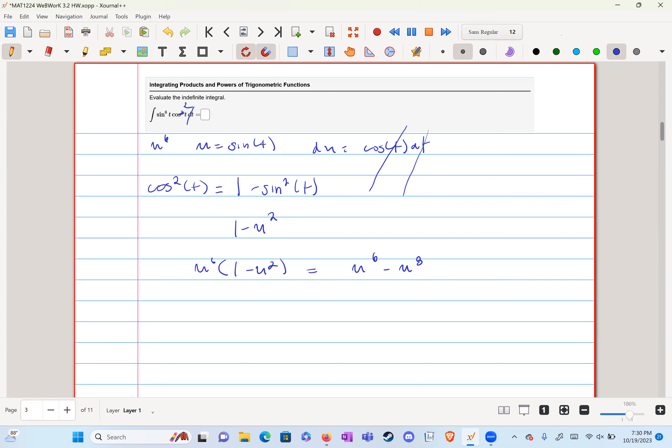And we can just put that into two different integrals. Okay, solve that. We get u to the 7 over 7 minus u to the 9 over 9.